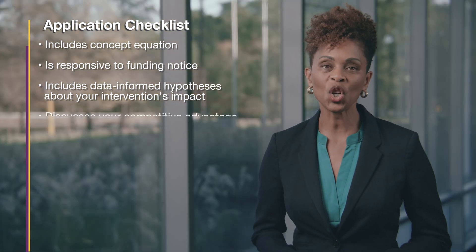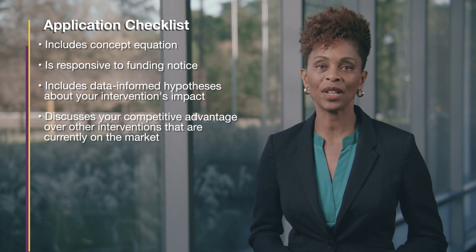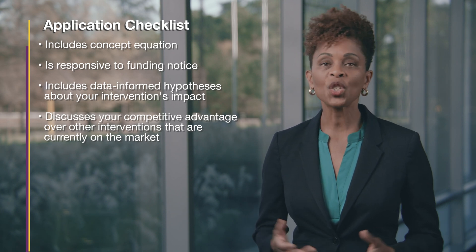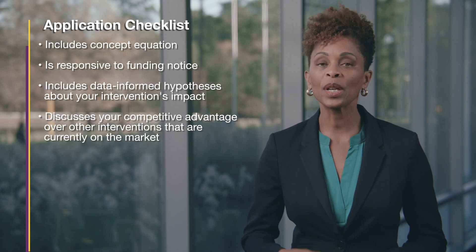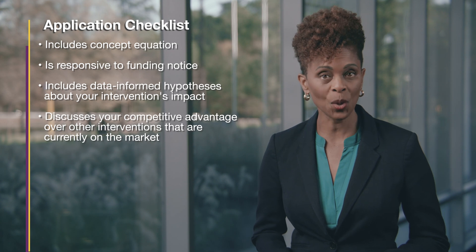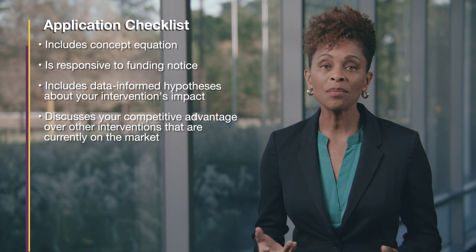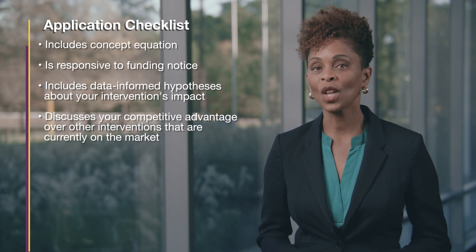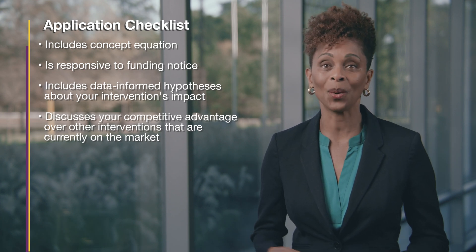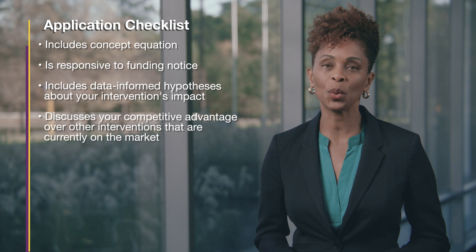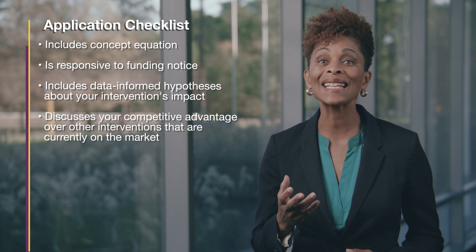In addition, you'll need to talk about why your product or approach is an improvement over other interventions that are currently on the market. Talk about why your competitors aren't delivering this kind of intervention and how your approach would improve health equity for your chosen population. How will your intervention better serve this population? Will it make existing processes more efficient? Will it better meet your population's needs, and if so, how? You want to make your case to reviewers that your proposed intervention will be a meaningful improvement over existing options.